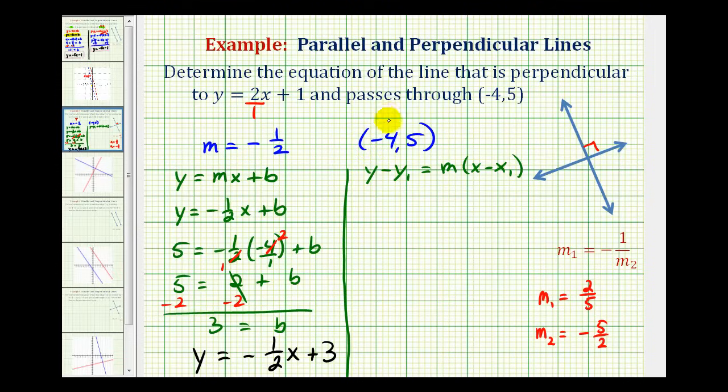and x sub 1, y sub 1 is the point on the line. So for this situation, x sub 1 is negative 4, and y sub 1 will be positive 5. So we'd have y minus 5 equals negative 1 half times the quantity x minus negative 4, which is the same as plus 4.